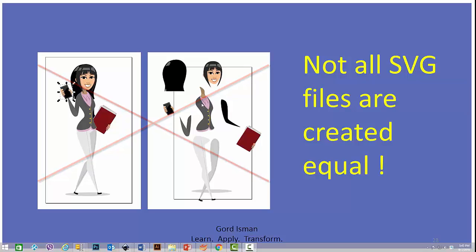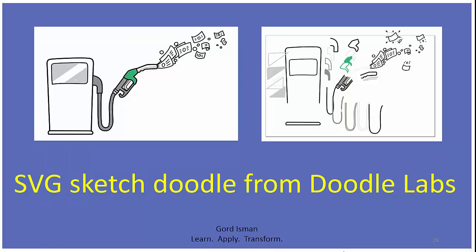Now we're looking at the SVG sketch doodle from Doodle Labs — the one from the animation I created using the gas pump and burning money. As you can see on the left-hand side, it's all fully intact and looks beautiful. It's something I use in whiteboard sketching, so it works quite nicely for that. But when I bring that image inside something like Inkscape or Adobe Illustrator, I found that there's a gazillion component pieces. Not all Doodle Labs or sketch images have this level of detail and layering, so again, you need to be careful. Look at what you're dealing with and make sure it's something you want to work with, because it could be a huge amount of work.